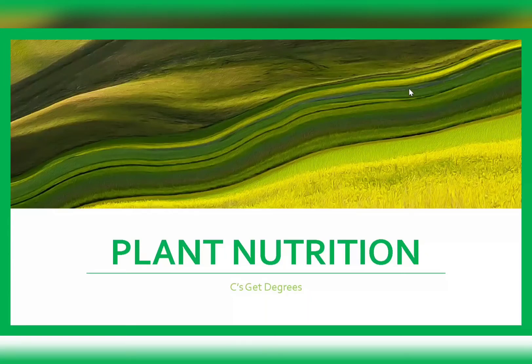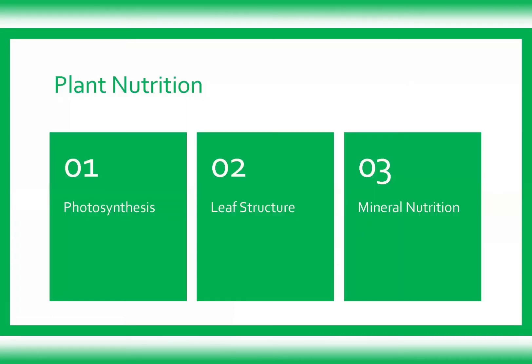Assalamu alaikum. The topic we're going to cover today is plant nutrition. We've divided it into three sections: photosynthesis, leaf structure, and mineral nutrition. Photosynthesis is the process carried out by green parts of a plant to produce their own food. Leaf structure includes internal and external structures of a leaf, and mineral nutrition is about the mineral ions that the plant absorbs from the soil and why they are required.